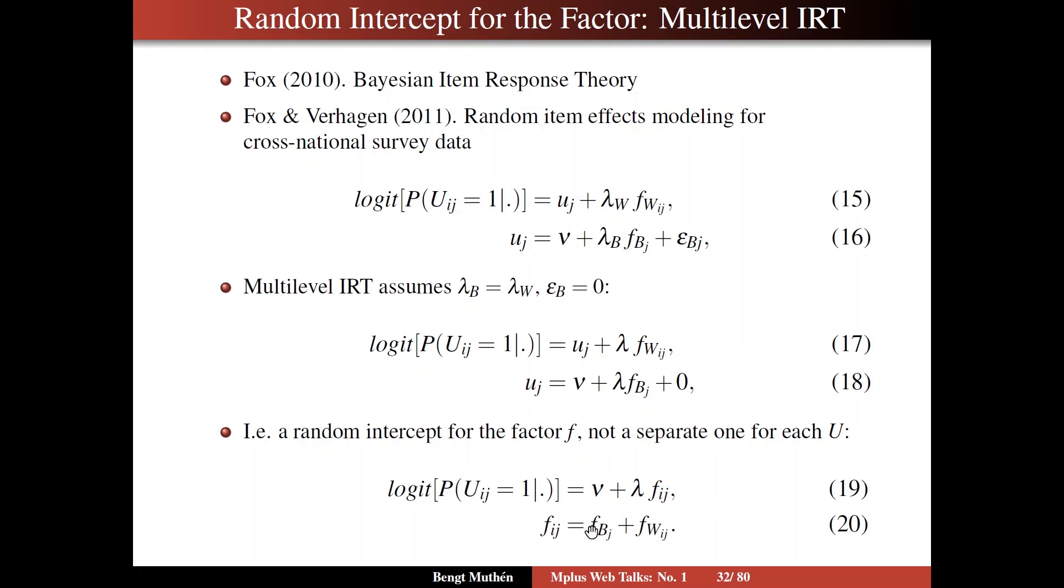If you multiply that with the lambda Fb times lambda Fw, then multiply by the same thing, then you have equation 17 and 18. So you have one random intercept for the factor, not a separate random intercept for each u.